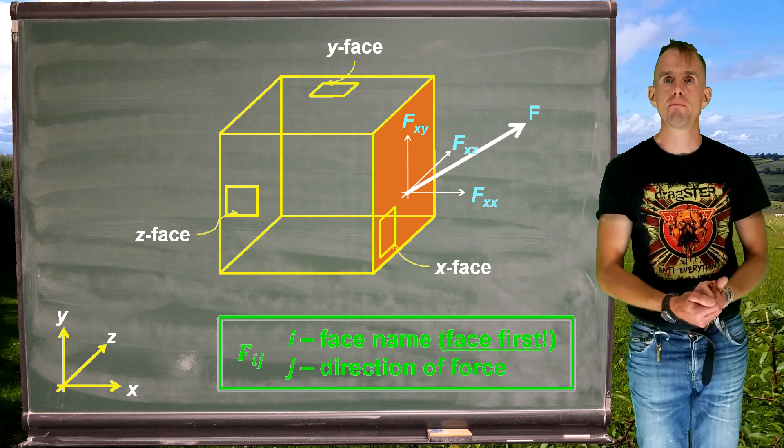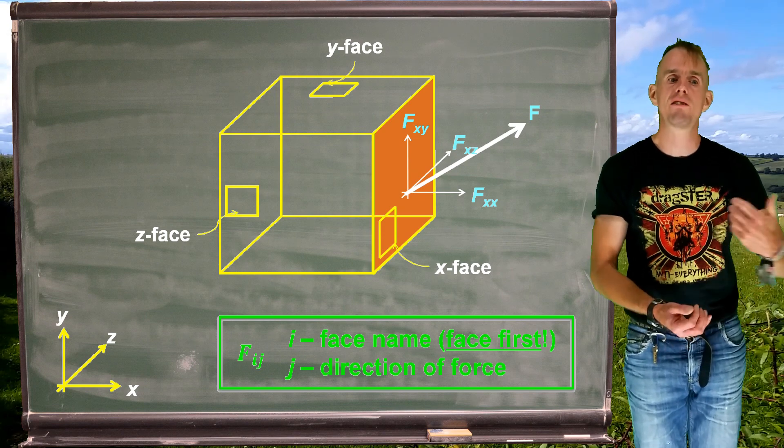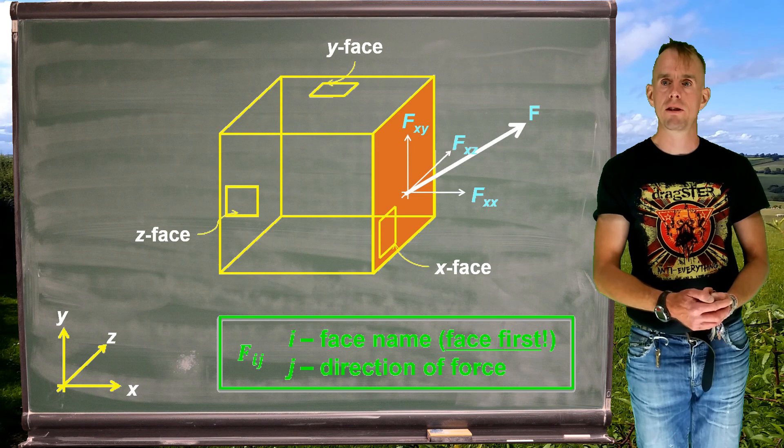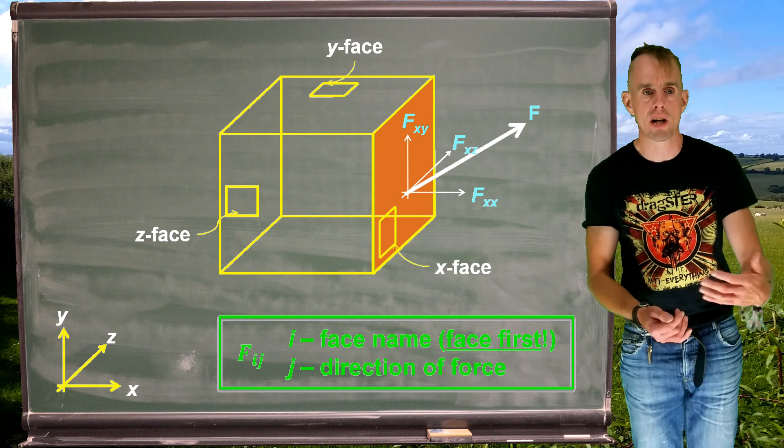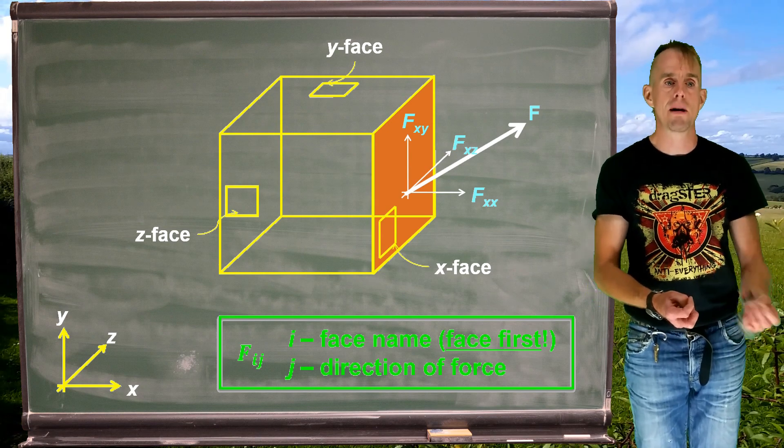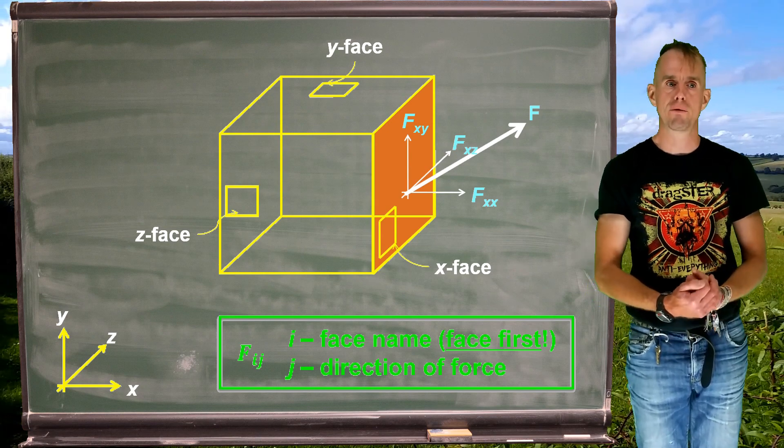The easy way to remember this subscript notation is it's face first when it comes to this subscript. So i is first, so therefore it's the face. So f_ij, i is the face name, and j is the direction that the force acts in.